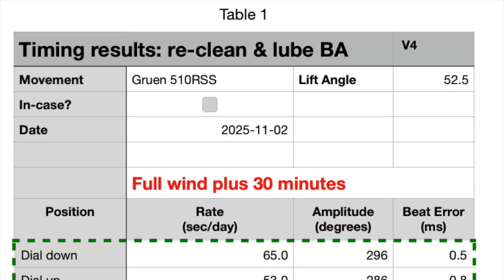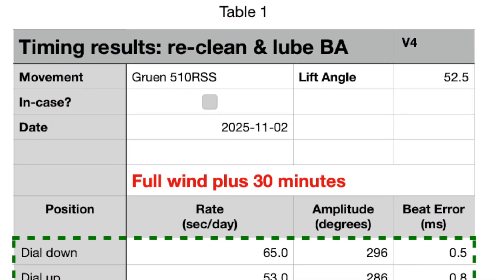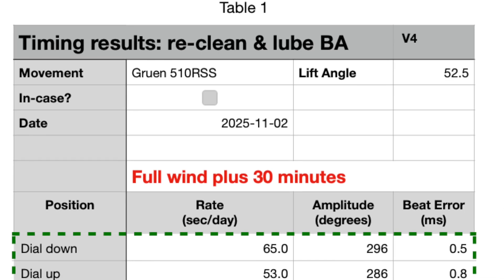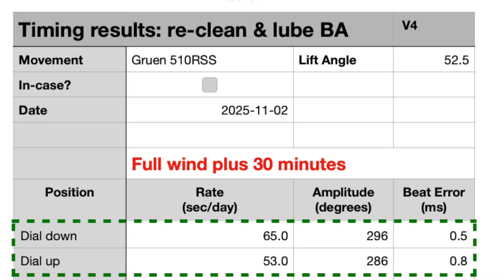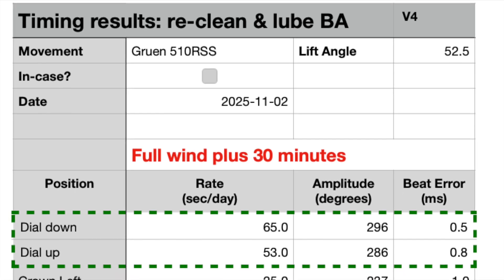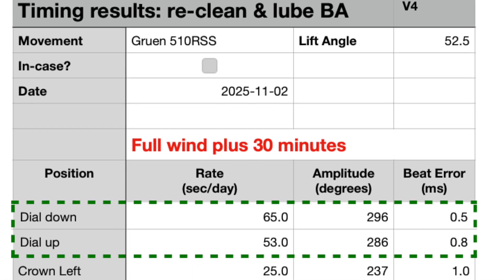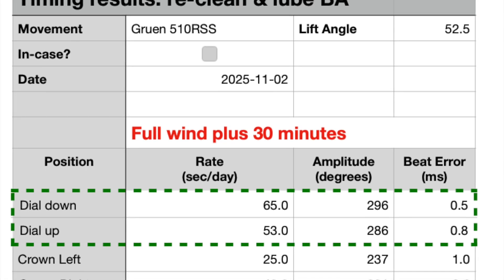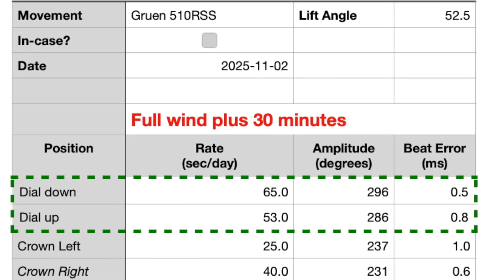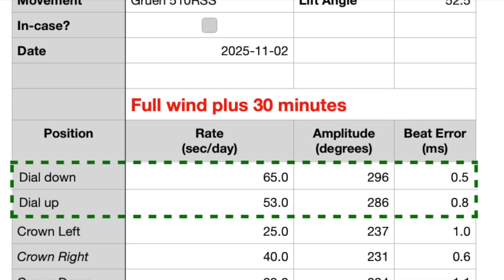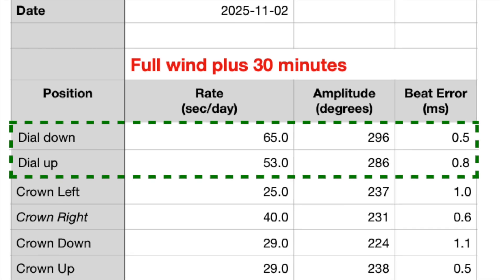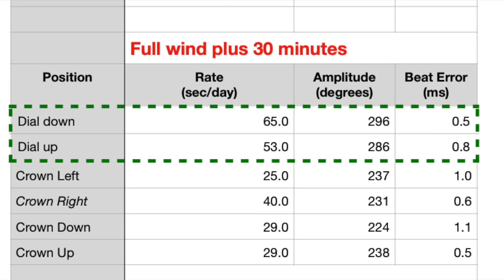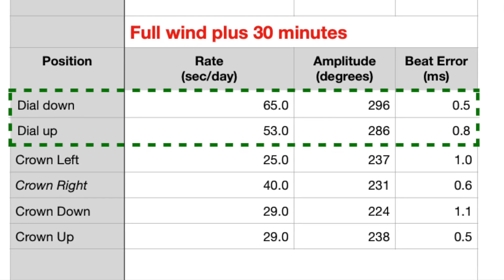The time grapher now reports better amplitude in all positions. Which means more power is getting from the mainspring to the balance assembly. Which is great. But now there's an oddity. The rate per day has greatly increased. The movement is running very fast, yet the regulator is in its slowest position. I've checked and the movement isn't magnetized. The hairspring appears normal. So I'm scratching my head over this.